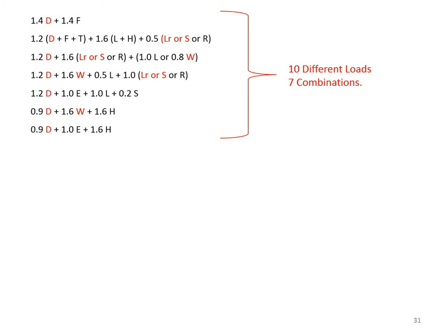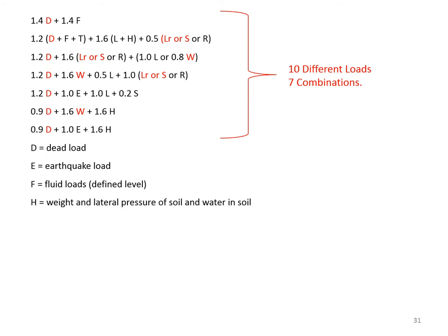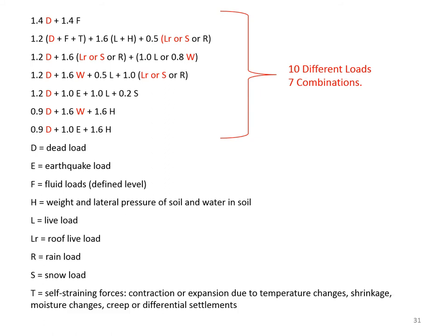The loads prevalent in our case are: D (dead load), E (earthquake load), F (fluid loads), H (weight and lateral pressure of soil and water in soil), L (live load), LR (roof live load), R (rain load), S (snow load), T (self-straining force such as temperature, shrinkage, creep, or differential settlement), and W (wind load).